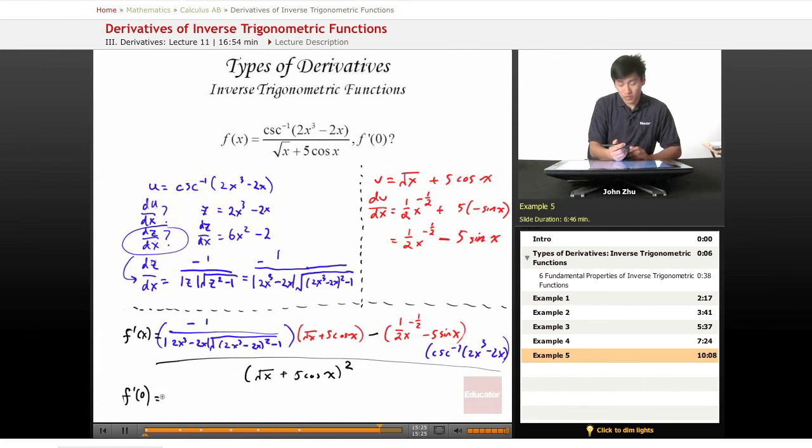So negative 1 over 2 times x cubed, we know that's 0, minus 2 times x, which is also 0. So 0 times another term, which becomes 0 automatically.